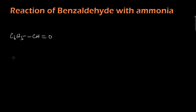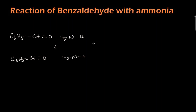We have another benzaldehyde: C6H5-CH=O, plus ammonia H2N-H, H2N-H, plus another benzaldehyde: O=CH-C6H5.